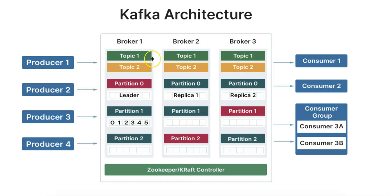Next, we have the topics themselves. A topic is a logical channel to which producers send messages and from which consumers read. Each topic is divided into multiple partitions, which are the fundamental units of parallelism in Kafka. Each message within a partition has a unique sequential identifier called an offset.